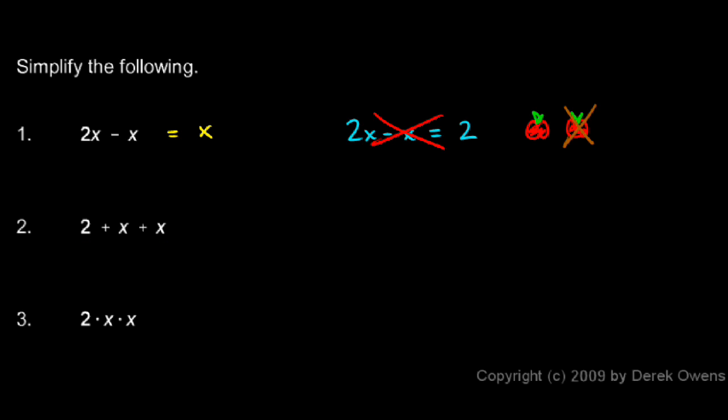Okay, this next one. 2 plus x plus x. Here we want to combine like terms. There are three terms here: the 2, and this x, and this x. These terms are the same—they're both x's. So those two together add up to 2x, and the 2 right there can't be combined with them. So this just ends up being 2 plus 2x. This 2 stays by itself, and the x plus x gives me this 2x right here.